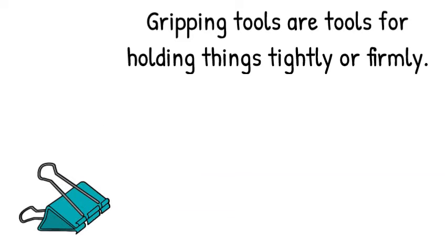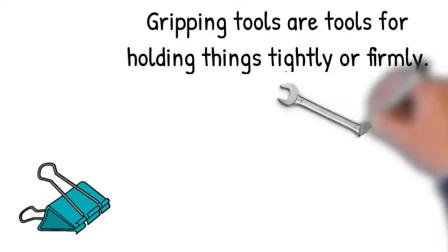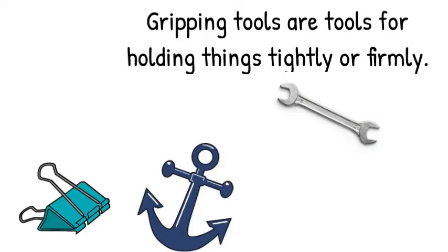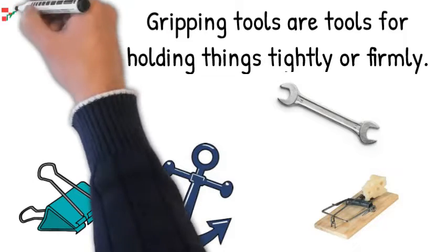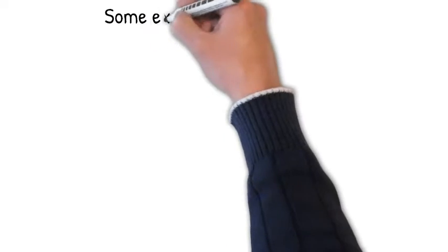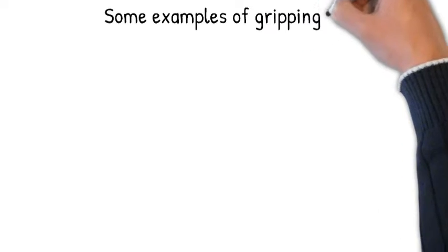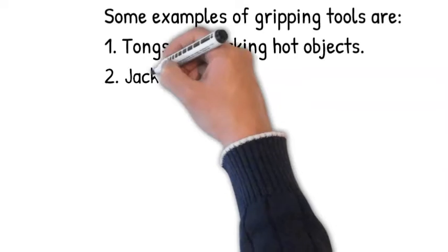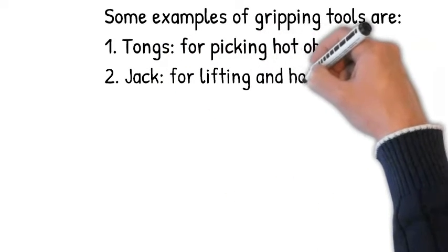Examples are clip, spanner, anchor, and mousetrap. Some gripping tools and their uses are as follows: tongs for picking hot objects, jack for lifting and holding vehicles so the tires can be changed.